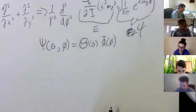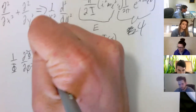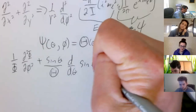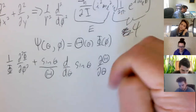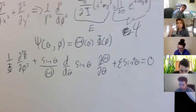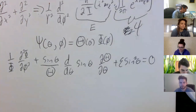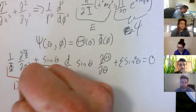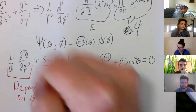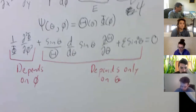We ended up getting to an equation where we had terms involving phi and sine theta with d-theta and d-phi derivatives, and it was all equal to zero. The benefit of this separation is that the phi terms and the theta terms are separated from each other—this portion depends only on phi, and that portion depends only on theta.